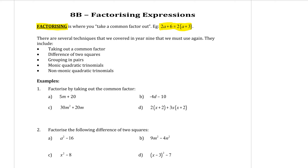However, that is not the only type of factorizing. There are several techniques you have covered in Year 9: taking out a common factor, difference of two squares, grouping in pairs (which is when you have four terms), monic quadratic trinomials, and non-monic quadratic trinomials — so five different factorizing techniques in total.